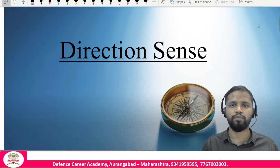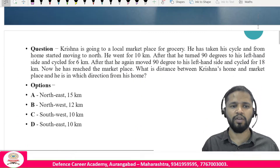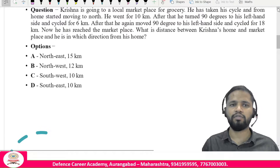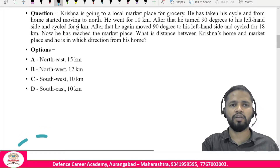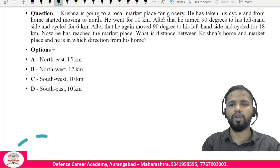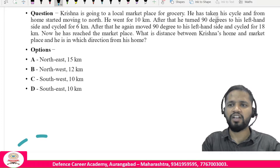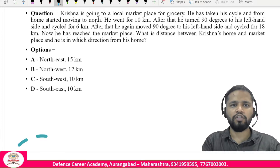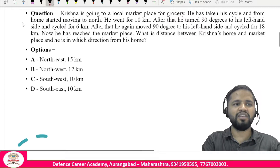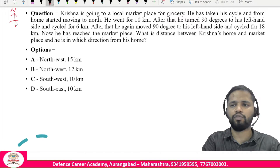The first question: Krishna is going to the local market for groceries. He takes his cycle from home and starts moving in the north direction. We draw his home, and since north is always above, he begins moving upward.